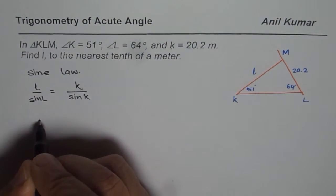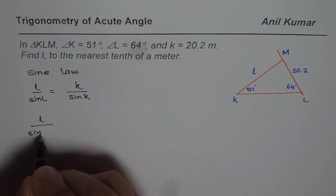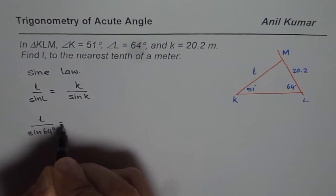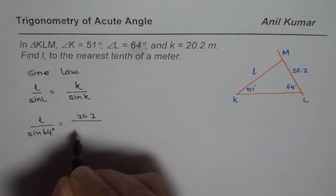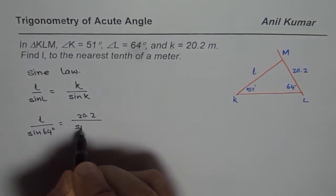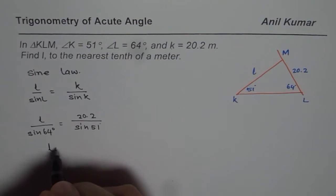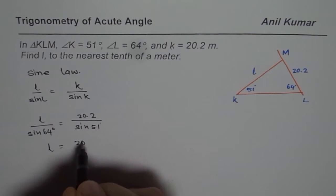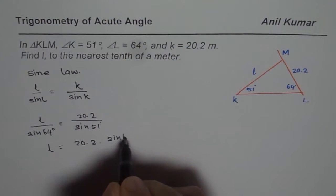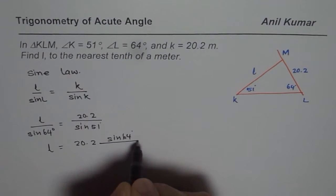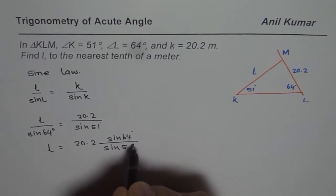Side L is not known. Angle L is known, so we write this as L over sine of 64 degrees equals K, which is 20.2, divided by sine of 51 degrees. From here, L equals 20.2 times sine of 64 degrees, divided by sine of 51 degrees.